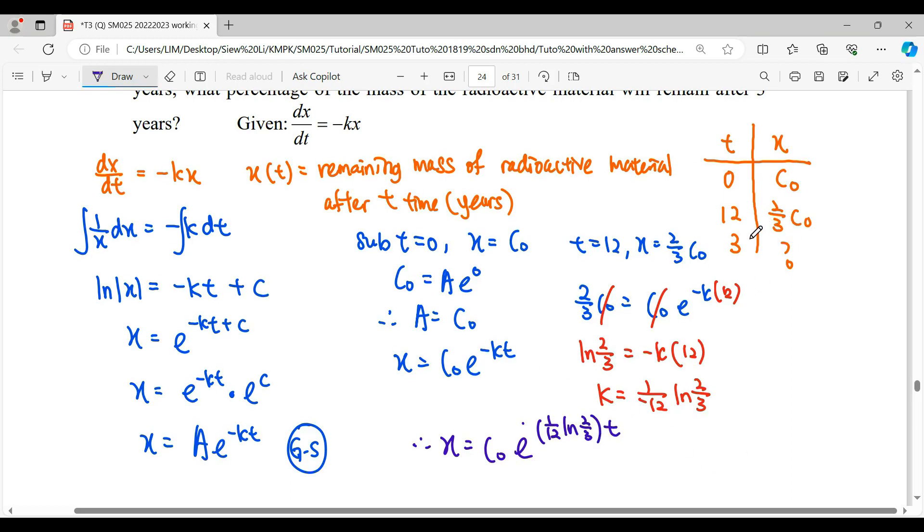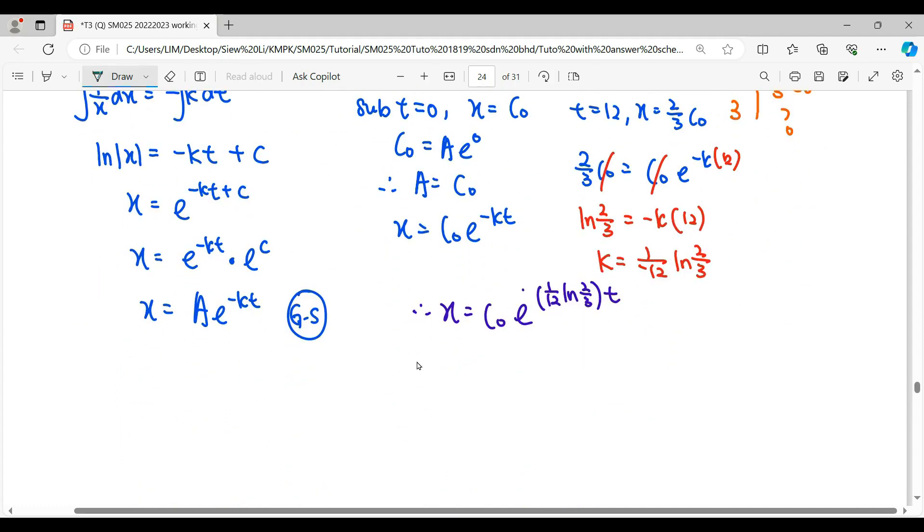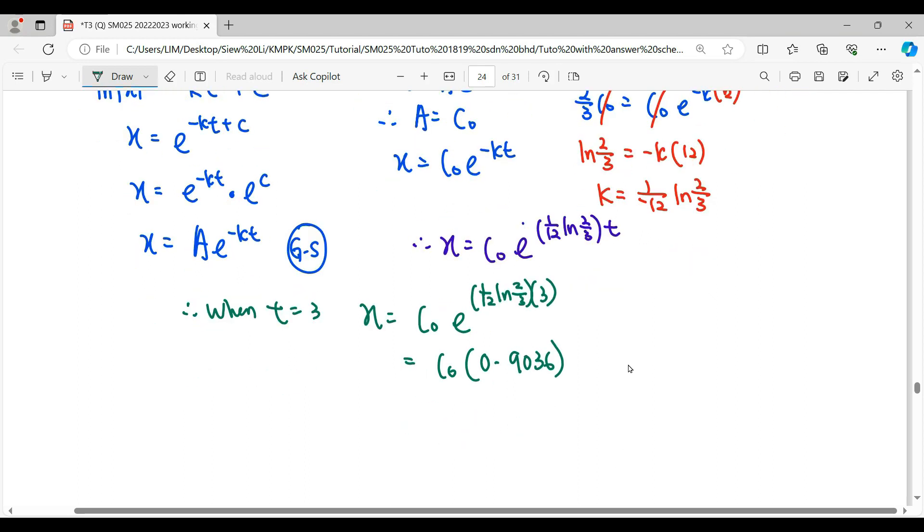Then we answer the question after 3 years, how much the remaining radioactive material in percentage. Therefore, when t equals 3, we get 0.9036 of initial value concentration. In percentage, we multiply with 100. Therefore, when we multiply, we are having 90.36% of the radioactive material remaining.